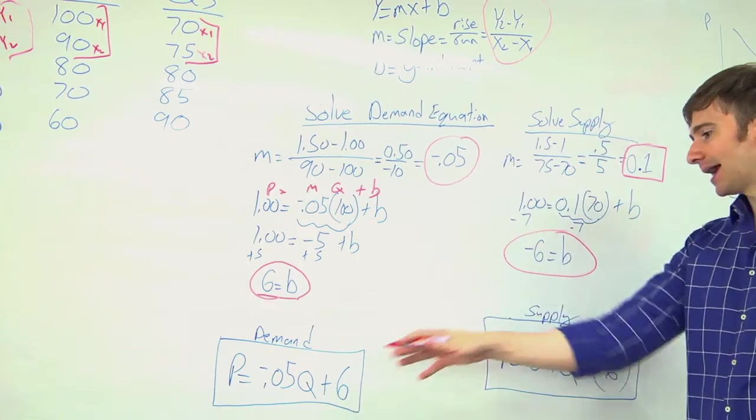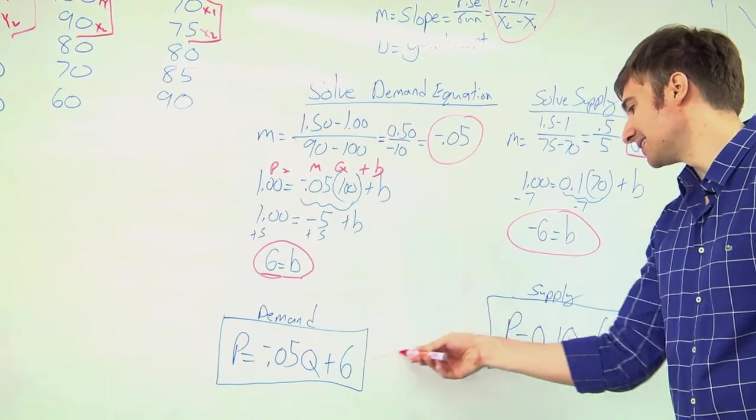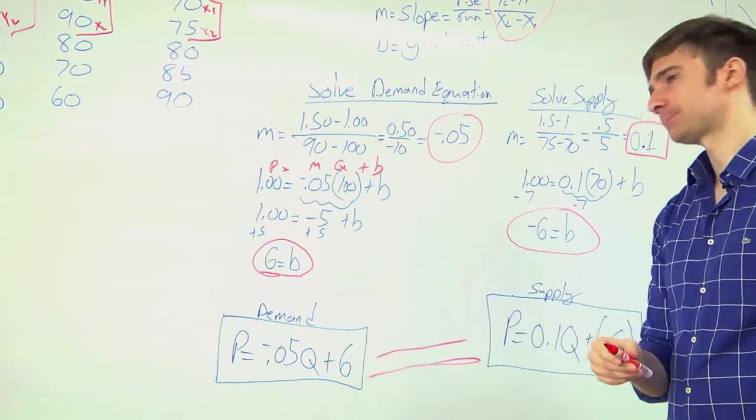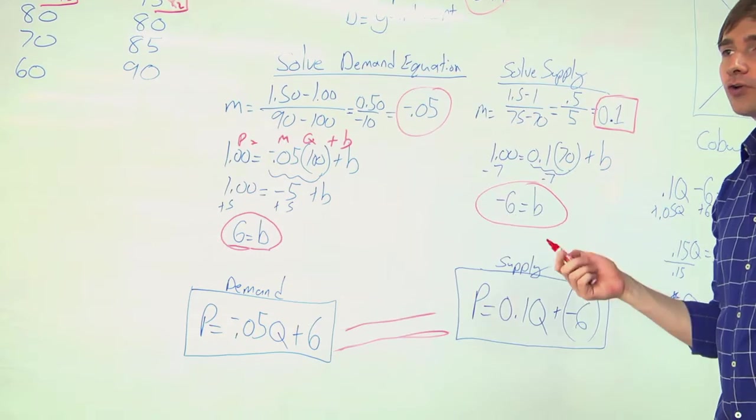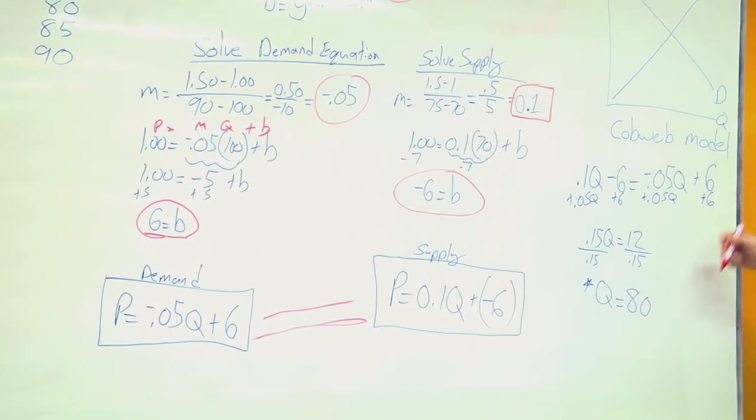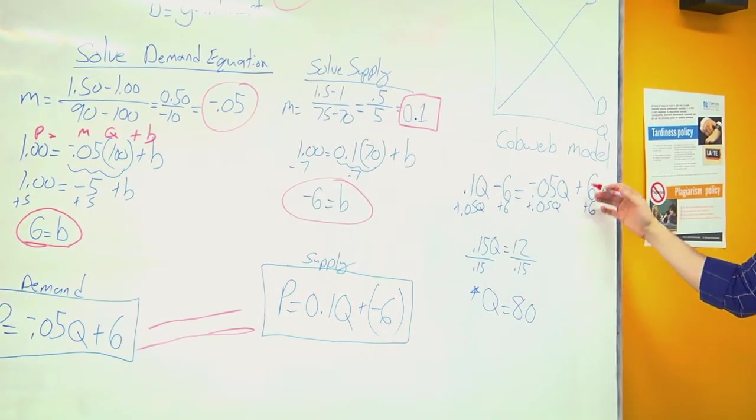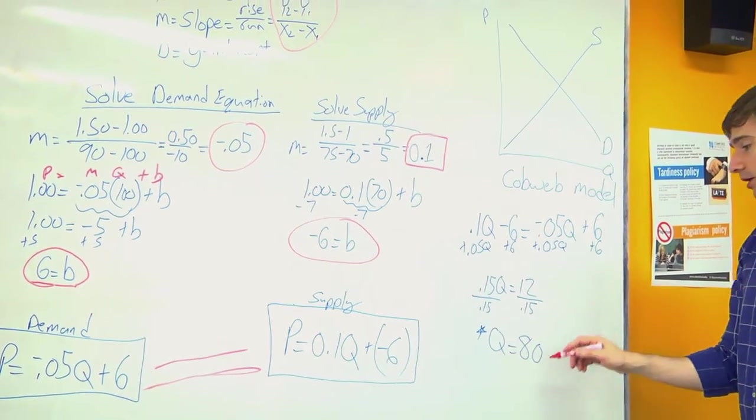Now that I have my demand and my supply equation, I want to set these equal to each other and solve for q. And the q that we're actually solving for is our equilibrium quantity.